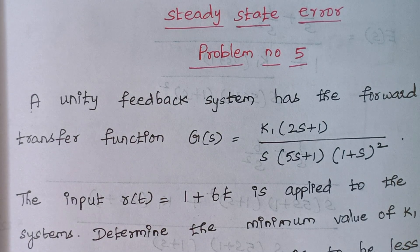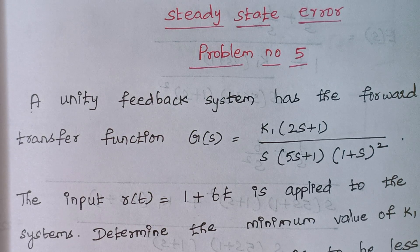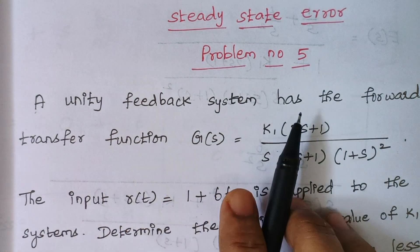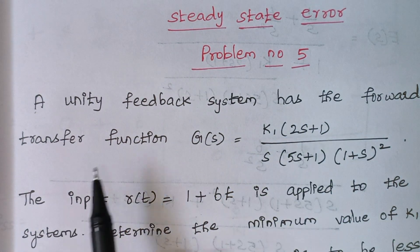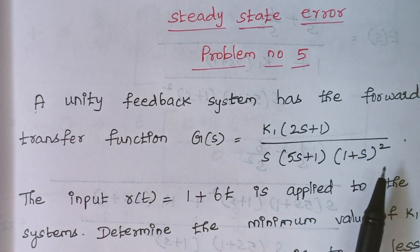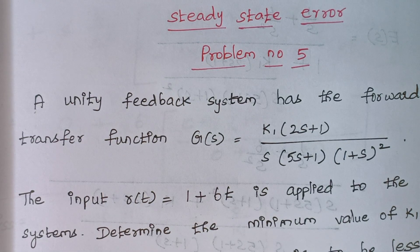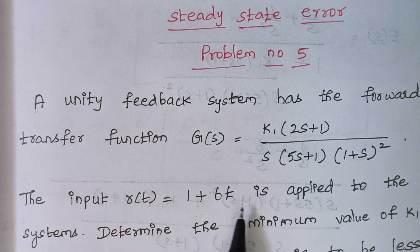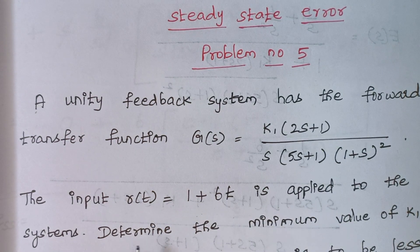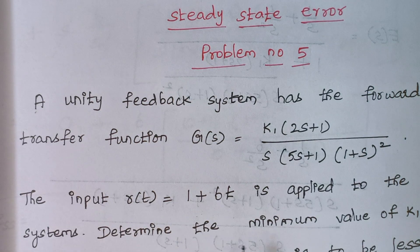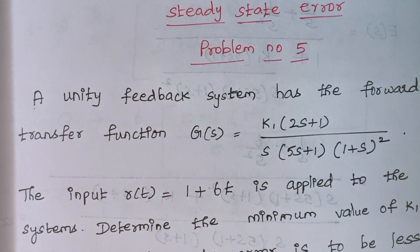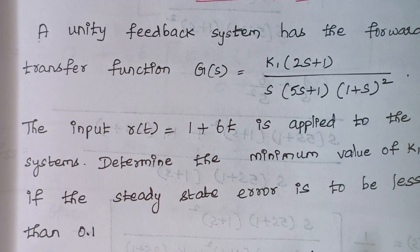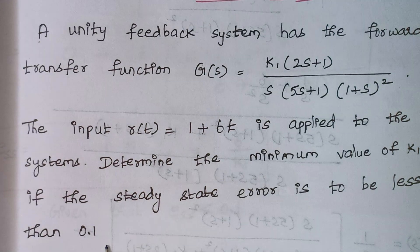Hello viewers, I am Kausalya. Today we are going to solve problem number 5 under the category steady state error. The problem is: a unity feedback system has the forward transfer function G(s). The input r(t) = 1 + 6t is applied to the system. Determine the minimum value of k1 if the steady state error is to be less than 0.1.